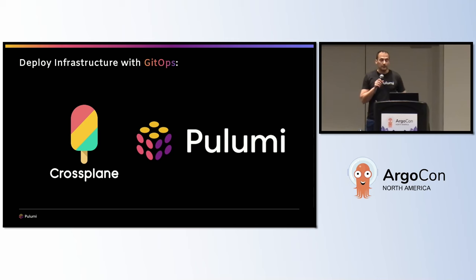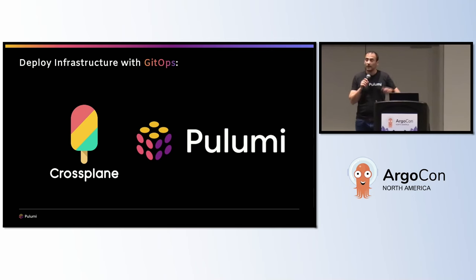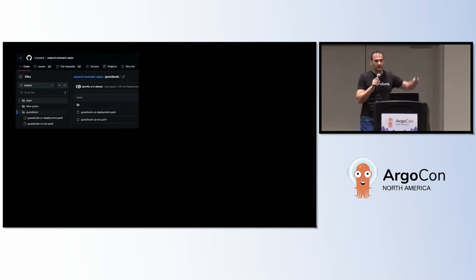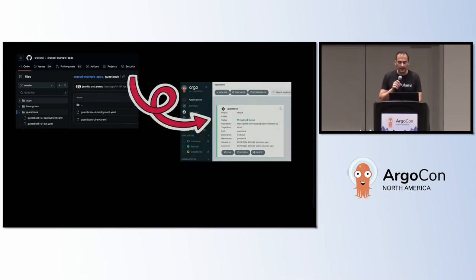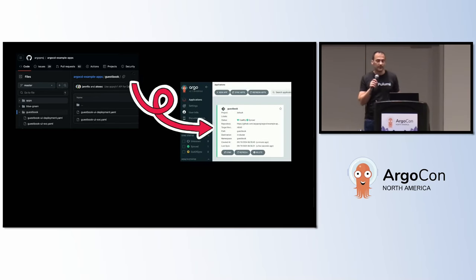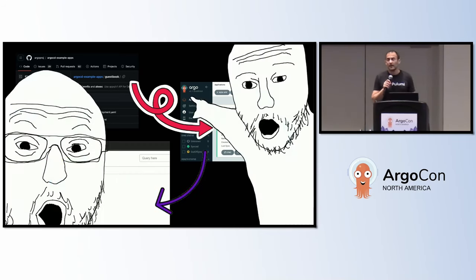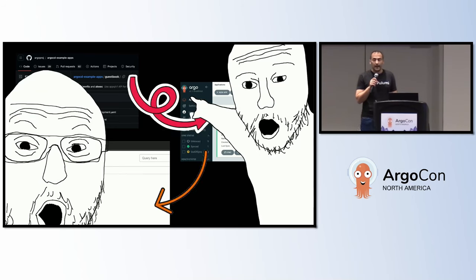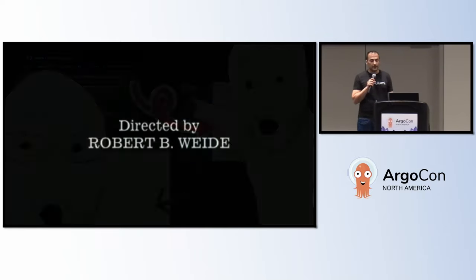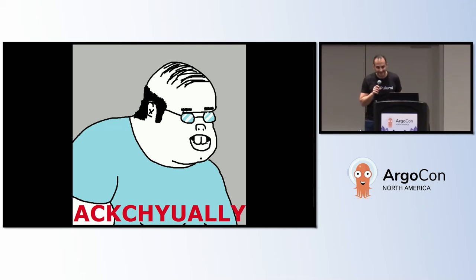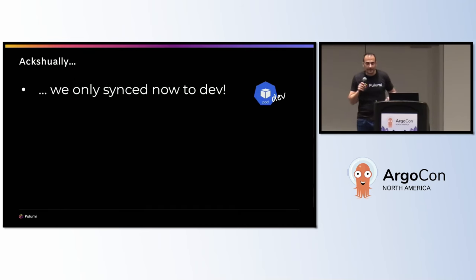In my example here, I'm going to use Crossplane and Pulumi — they both have operators I can deploy on my cluster. So I want to deploy infrastructure using the GitOps approach on my Kubernetes cluster with Crossplane or Pulumi. I start by defining my repository, put everything in my manifests, then Argo picks the stuff up, and then it gets delivered as an application — or when using Crossplane or Pulumi, also the infrastructure part. Everything is deployed. But now comes the point: we only sync to one environment — let's call it dev.